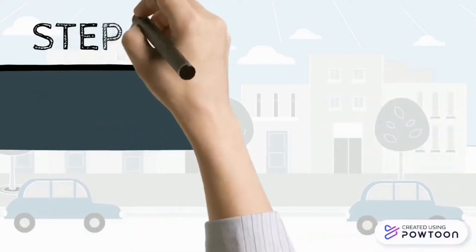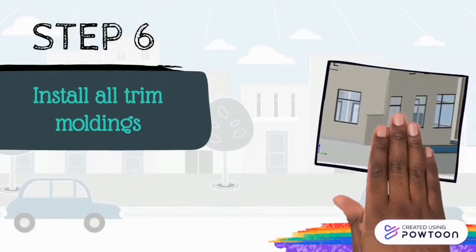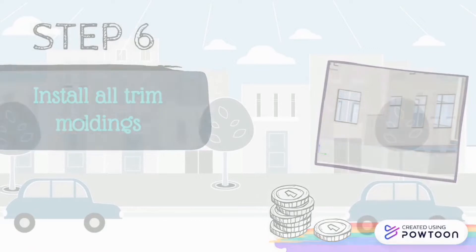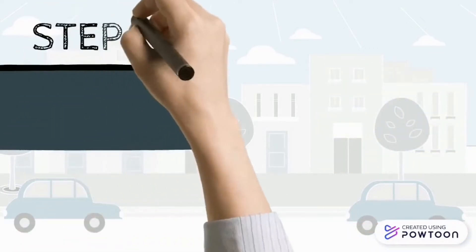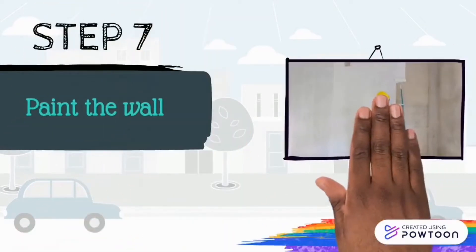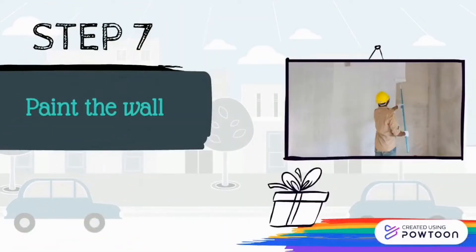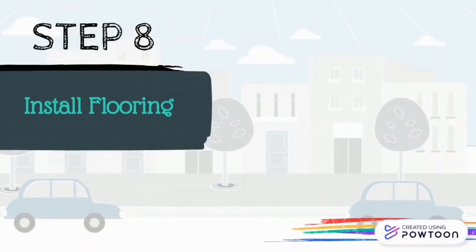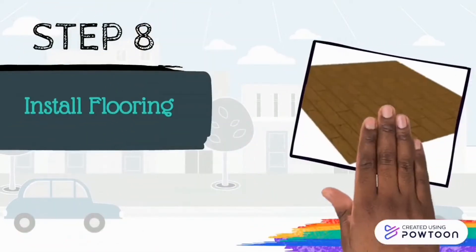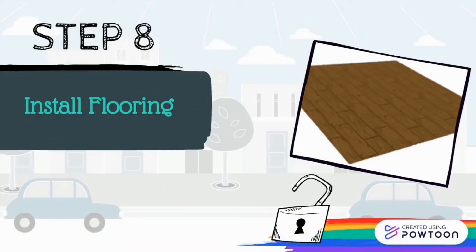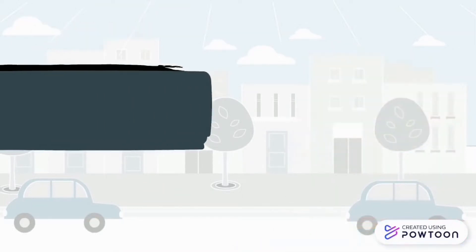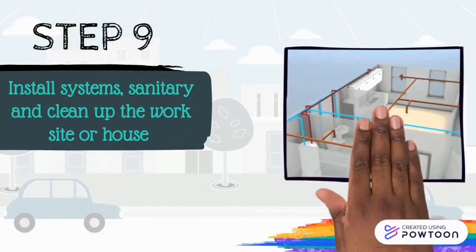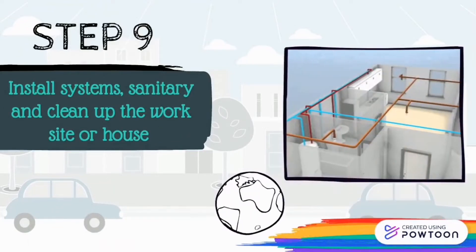Step 6: Install all trim buildings. Step 7: Paint the wall. Step 8: Install flooring. Step 9: Install system sanitary and clean at the worksite or house.